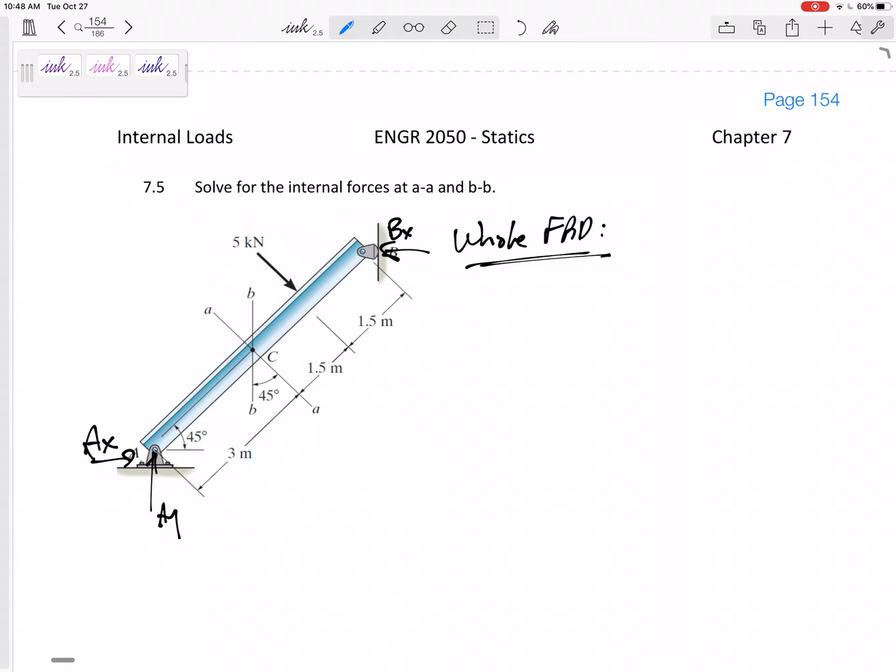So from the whole free body diagram do you see that summing the moments about A, AX goes straight through it, AY goes straight through it. I've got this five kilonewtons that's 4.5 away creating a negative moment and then I've got this BX. Its perpendicular distance would be six and we're looking it's 45 degrees. Six times sine 45 equals zero.